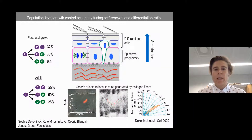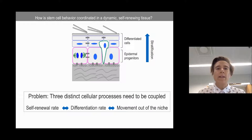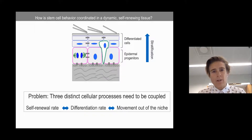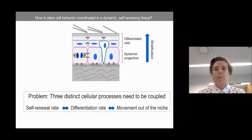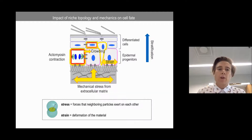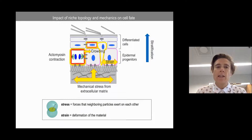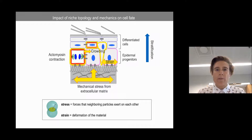We then asked: how does the regulation we understand at the population level actually occur at the level of single cells, where a single stem cell has to decide whether to self-renew or differentiate? The problem is how cells couple three distinct processes: the decision to self-renew, to differentiate, and to move out of the basal layer niche upwards to the differentiated layers. We thought mechanical forces could be a very efficient way to relay information about tissue state to single cells and coordinate behavior with neighbors.